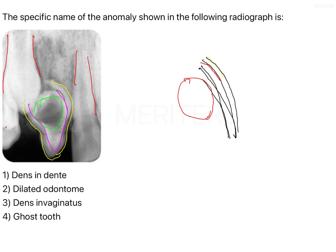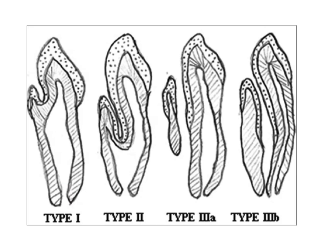This tooth-within-a-tooth appearance is nothing but dens invaginatus, also known as a dilated odontome, which is the answer here. Oehler was the one who gave the classification, based on the amount of invagination present.